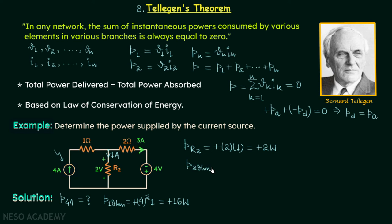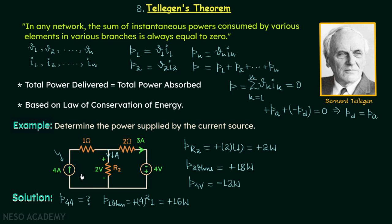The fourth element is the two-ohm resistor. Power absorbed equals 3² × 2 = plus 18 watts. The fifth and final element is the voltage source; the power delivered by this source equals 4 × 3 = 12 watts, with a negative sign because delivered power is negative. We have now calculated instantaneous powers for four of the five elements.